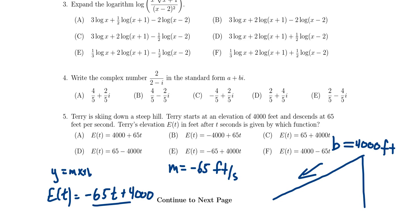We see that the correct answer is choice F. I wrote it a little bit differently, but it's the exact same function. Terry's elevation would be 4,000 minus 65T.